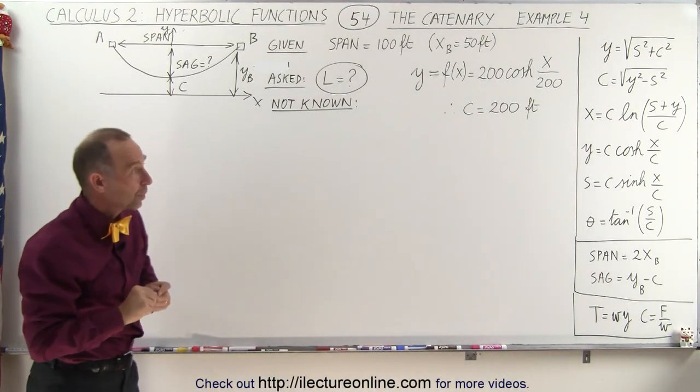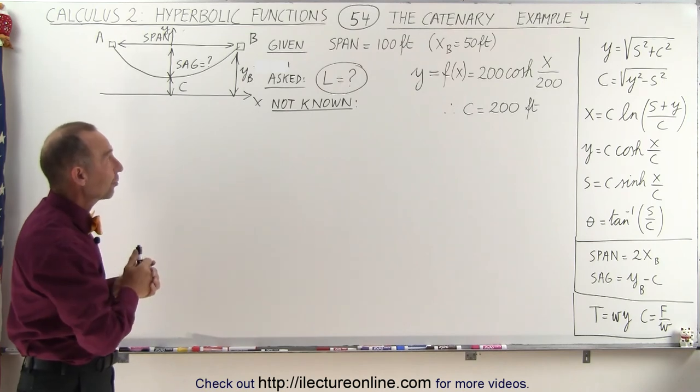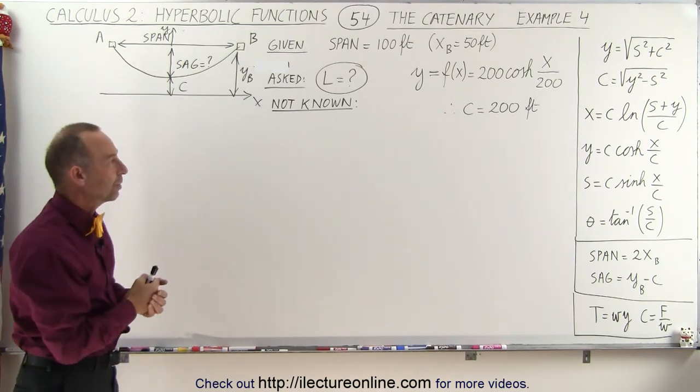And once they give you c, when you have a hyperbolic function like this for a catenary, the problem is not so difficult.